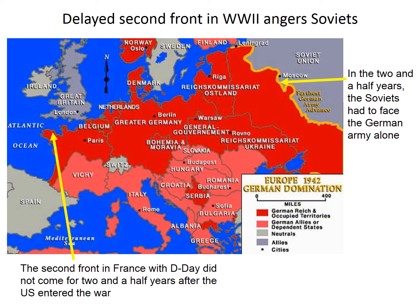By that time, the Soviets had beaten back the Nazi thrust on their own and had suffered tremendous casualties in the process. The Soviets believed that the delayed second front was intentional to ensure that they suffered greatly. Still later, when Italy fell to the Allies, the Soviets wanted a say in its post-war government, but the U.S. and its Western allies created Italy's post-war government unilaterally, ignoring the Soviet Union.